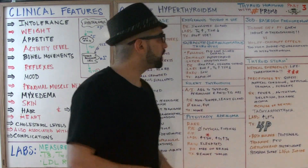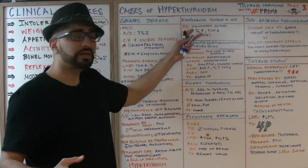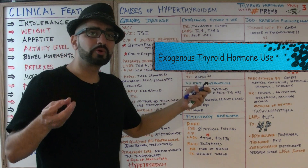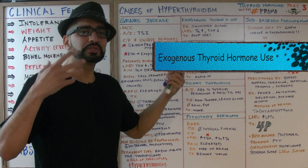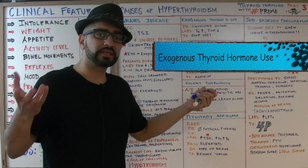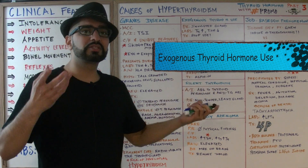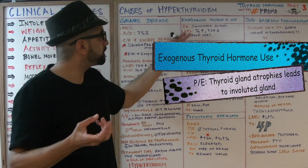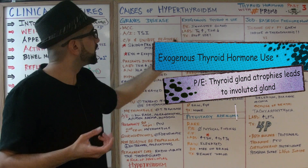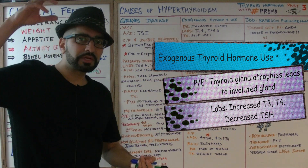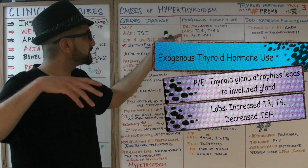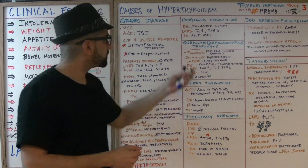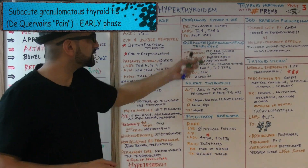Another cause of hyperthyroidism is exogenous thyroid hormone use — patients take it to increase their BMR and lose weight. The thyroid gland itself will atrophy, presenting as an involuted gland on physical exam. Labs show high T4 and low TSH. Treatment: simply stop the use of exogenous thyroid hormone.